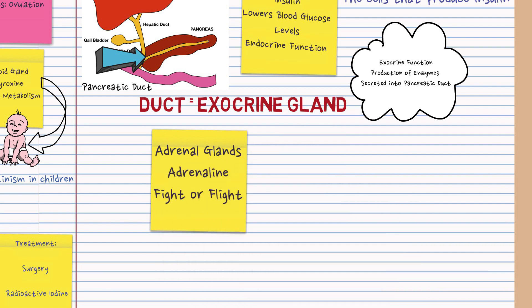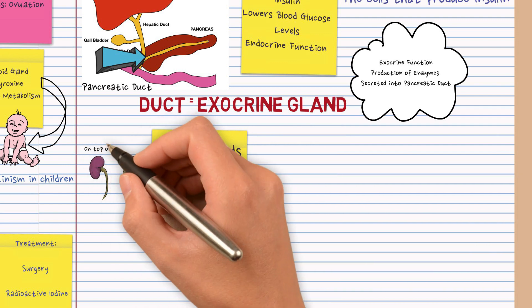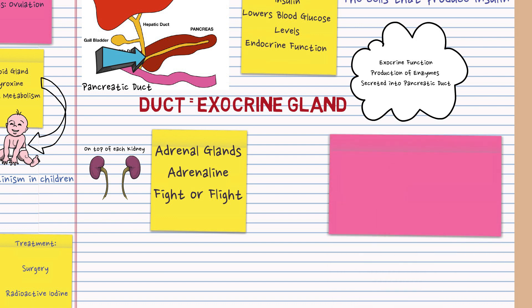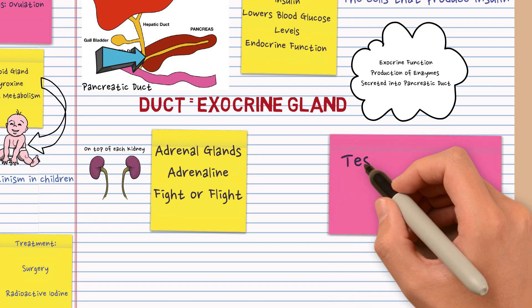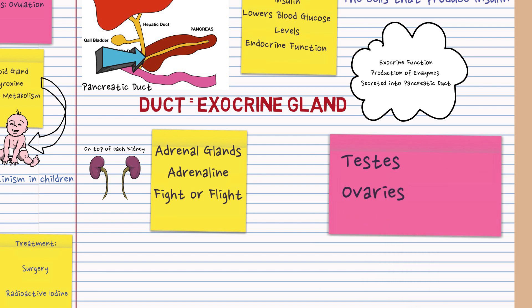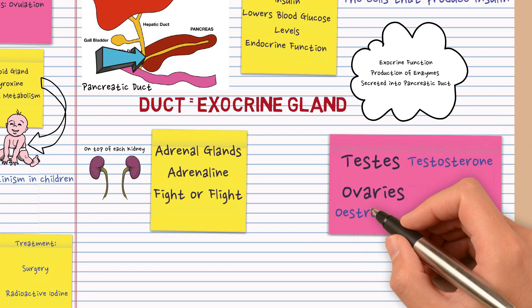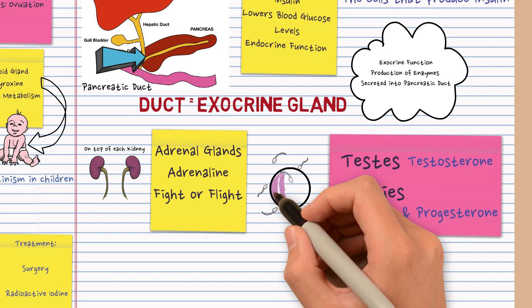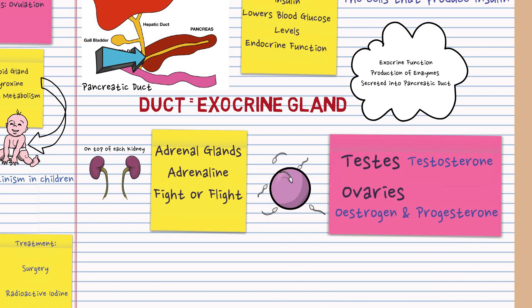Sitting on top of your kidneys are the adrenal glands. They produce adrenaline, or epinephrine, which is responsible for your fight or flight response. Next up are the testes, which produce testosterone, and the ovaries, which produce estrogen and progesterone. Know a little bit about each one of those hormones.